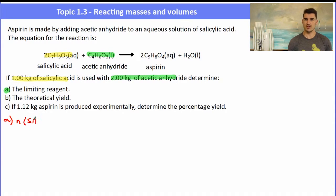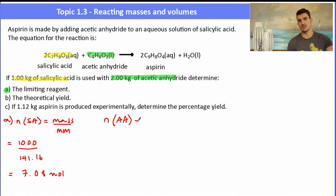The first thing we need to do is find the number of moles of both. To work out the number of moles of salicylic acid, don't forget one kilogram - we need to convert that to grams, so that's a thousand grams divided by the molar mass of salicylic acid, giving us 7.08 moles. Then I've got to work out the number of moles of acetic anhydride: mass over molar mass. Again, we've been given two kilograms, so don't forget to change that to grams, so we have 2000 divided by 102.1, giving us 19.6 mole.